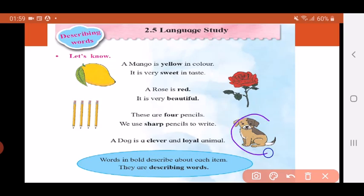Here we have a dog. Now let's see which words are describing this dog. A dog is a clever and loyal animal. So what type of dog is this? Clever and loyal. So both these are describing the dog.